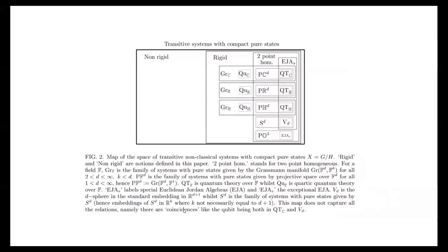I want to finish with a picture. This is a more precise picture of the space of GPTs, looking at transitive systems with compact pure states. Amongst all transitive systems, most in a vague sense are non-rigid. Then we have the family of rigid ones, and we classify two-point homogeneous systems, with quantum theory as an example of systems with different probabilistic structures. I'll end here and welcome any questions. Thank you.